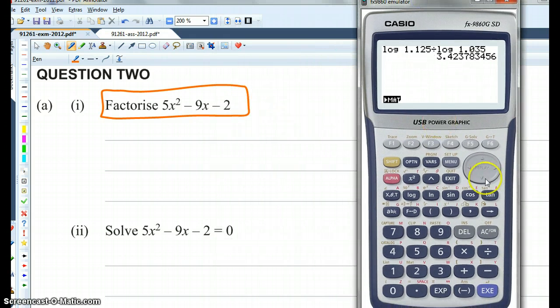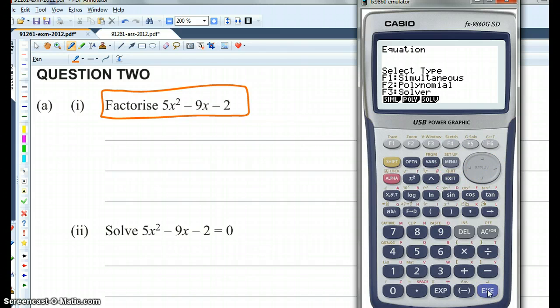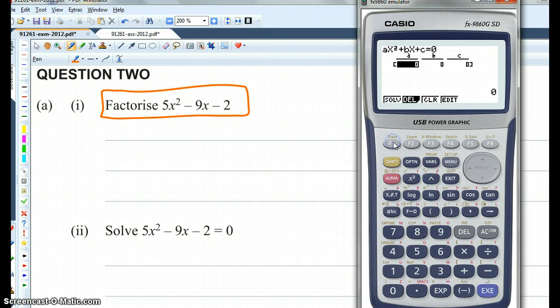Now that you're allowed your calculator, you go menu, you go equation, and you go polynomial, and degree 2. And it's 5x squared, so a is 5, because we're comparing it to ax squared plus bx plus c equals 0.